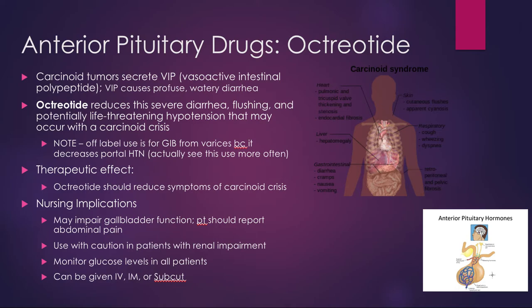Octreotide is a medication given in the ICU to reduce the symptoms of a carcinoid crisis, where certain types of cancerous tumors secrete VIP — vasoactive intestinal polypeptide — which causes a ton of diarrhea. Octreotide reduces this and also increases blood pressure. We use it more often in patients with GI bleeds from esophageal varices because it decreases portal hypertension. Esophageal varices are often caused by a backup of blood from the liver into the veins of the esophagus, and if we reduce that backup, we can reduce the backup into the esophagus.